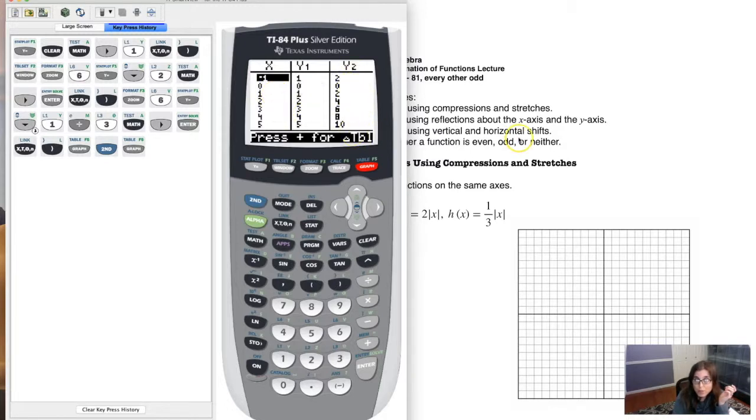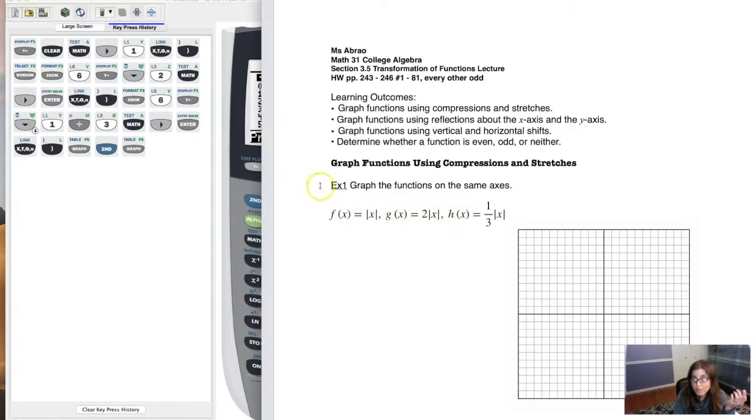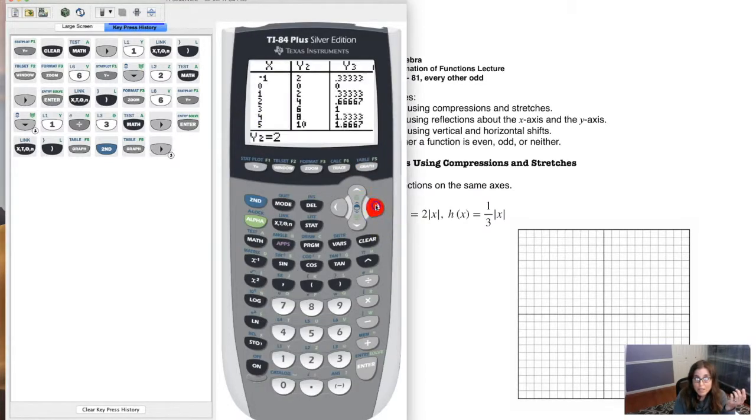And in y2, you see all the doubled absolute values, right? The absolute value of negative 1 is 1, but double that is 2. And that was our g of x function. Now if I hit the right arrow key, I can go over to y3, and you can see when x was negative 1, the absolute value was 1 third. So you can see all of these tables, and they can assist you in your graphing.